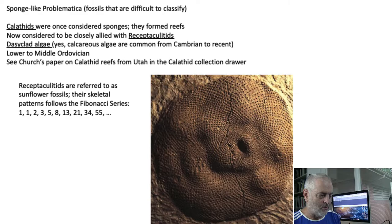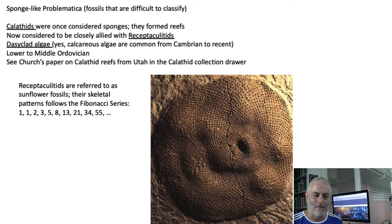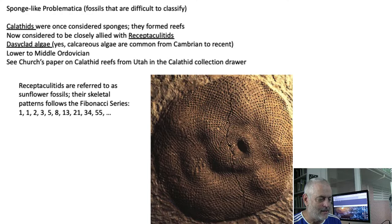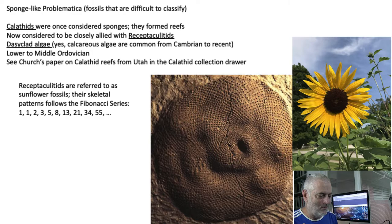Stromatoporoids are a sort of laminar structure. People thought for a long time they were related to something called colathids. Some of the earliest features that some people had thought were stromatoporoids were probably a type of algae. The colathids were a group that existed in the middle Ordovician, but they're probably more closely related to receptaculitids — that's a dasyclad algae. Calcareous algae go from Cambrian to recent. These receptaculitids are sometimes called 'sunflower fossils' because you can see a spiral to the fossil that actually follows the Fibonacci series — 1+1=2, 2+3=5, 5+3=8, 8+5=13 — a pattern found in many living organisms like sunflowers.